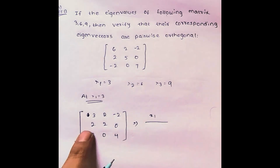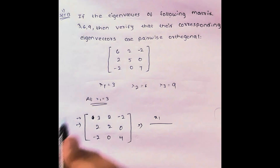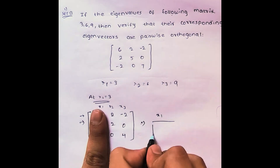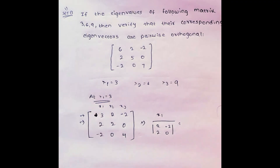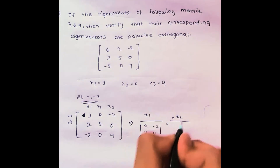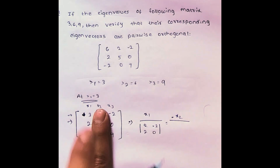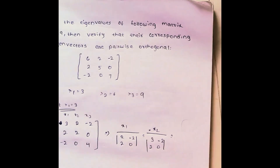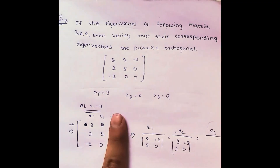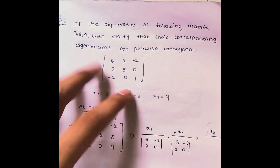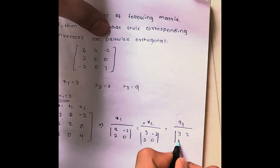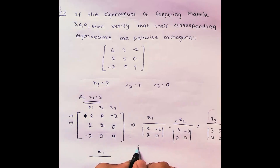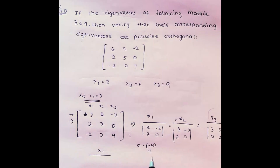Now we find x1 by considering the two rows. For x1, the minor uses the 2-by-2 submatrix: 2, minus 2, 2, 0 — giving 2 into 0 minus 2 into minus 2, which is 0 plus 4, so x1 by 4.